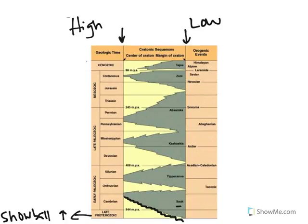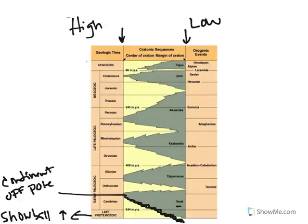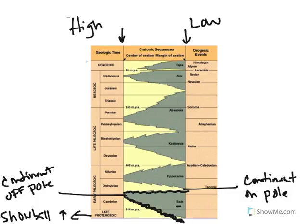So let's go back over here to our Sloss sequence. If here we are in the late Proterozoic, moving into the Cambrian, and we have a sea level rise, that means right here we have a continent off the pole. Well, then look, what happens right here? Sea level falls. So that means right here we have a continent moving back on the pole. Now, here's the beauty of it. It's going to be the same every time.